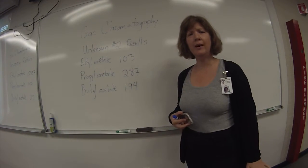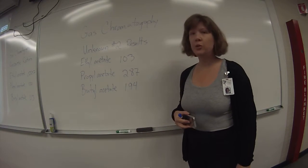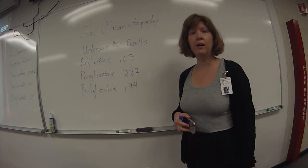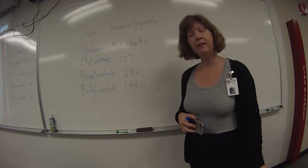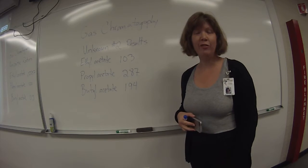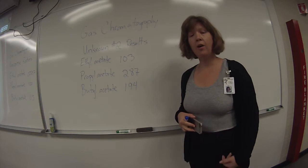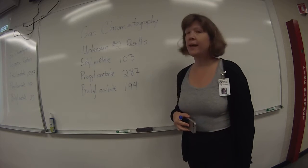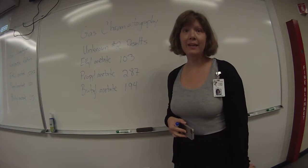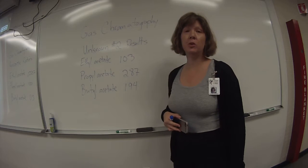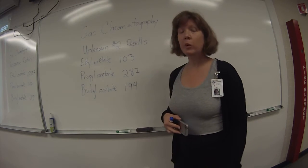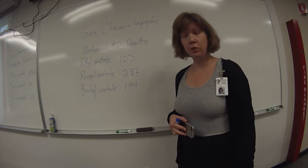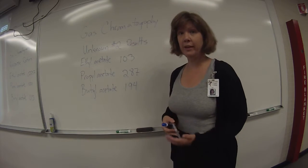Alright, so what I'm going to show you how to do now is to figure out the composition of your unknown using the areas under the curve that you obtained from the chromatogram of your unknown, and then correcting those areas using the response ratio that you got from the equimolar mixture. I showed you how to calculate the response ratio in the previous video.